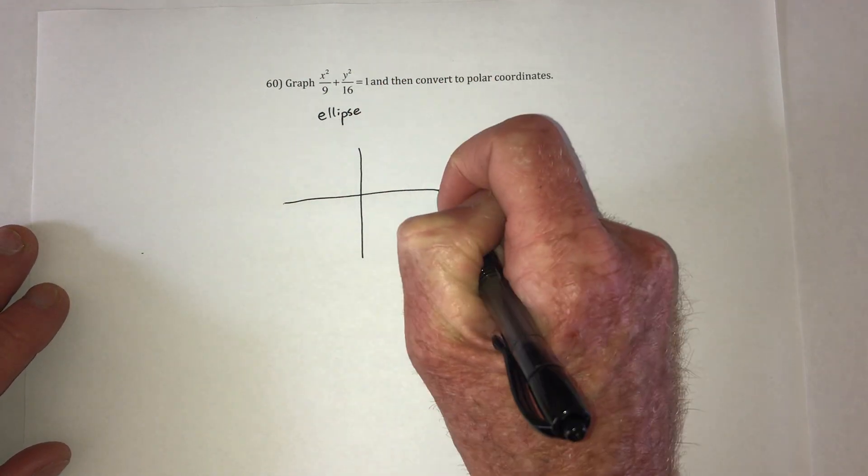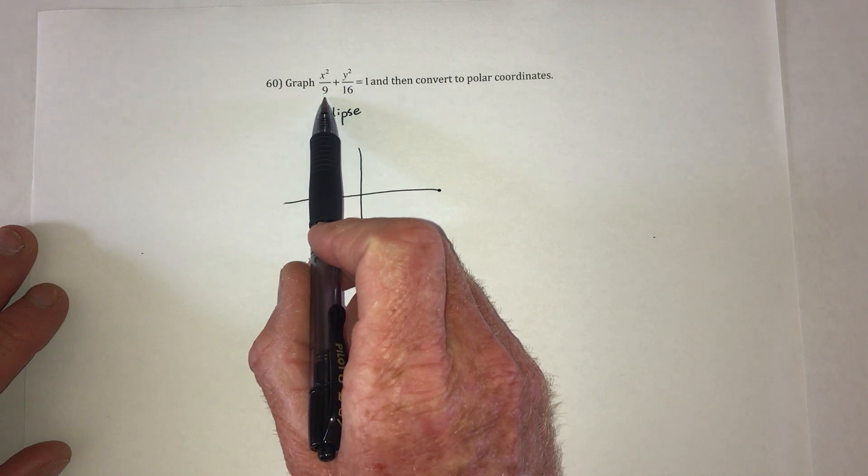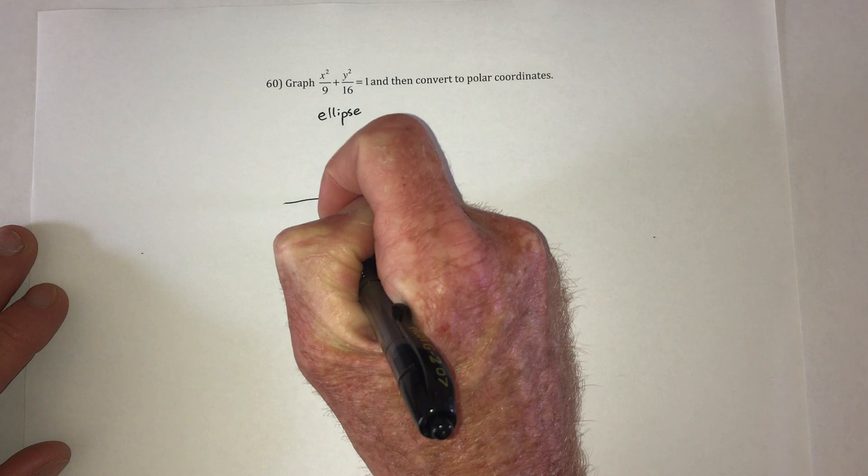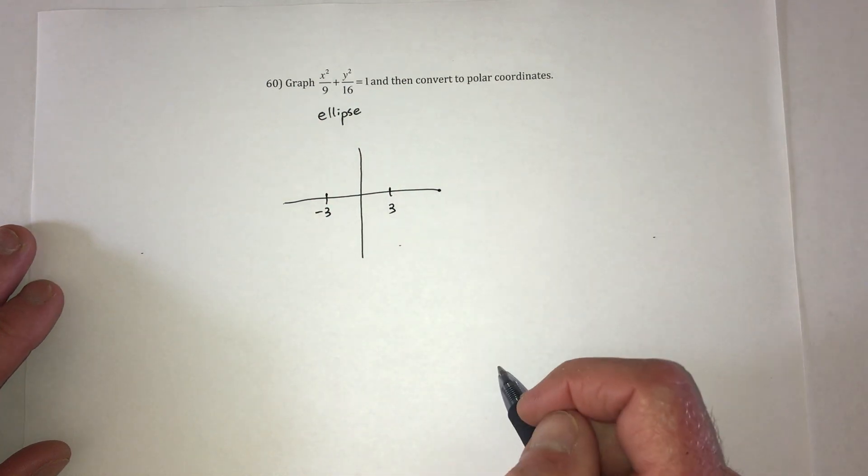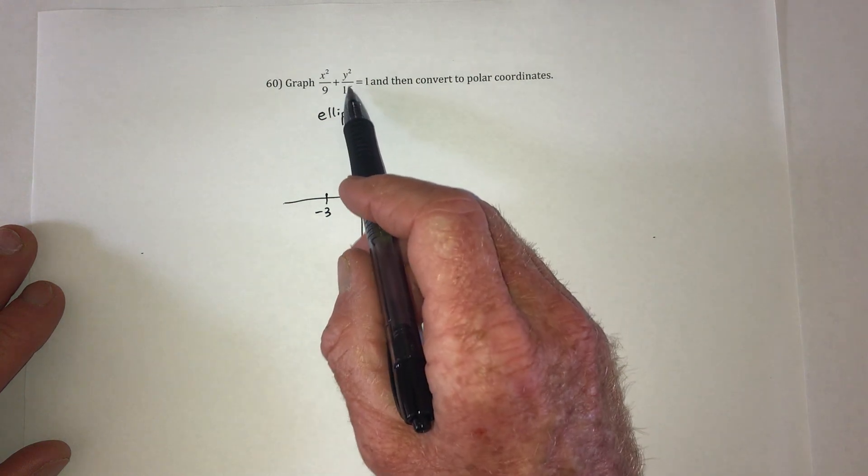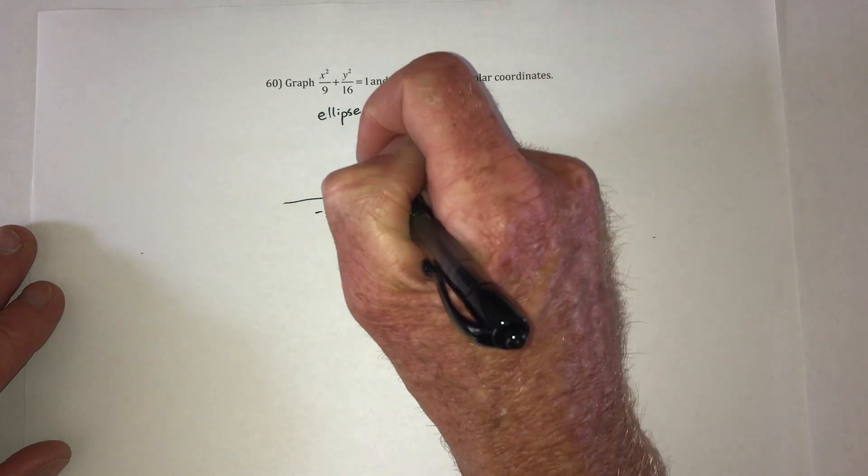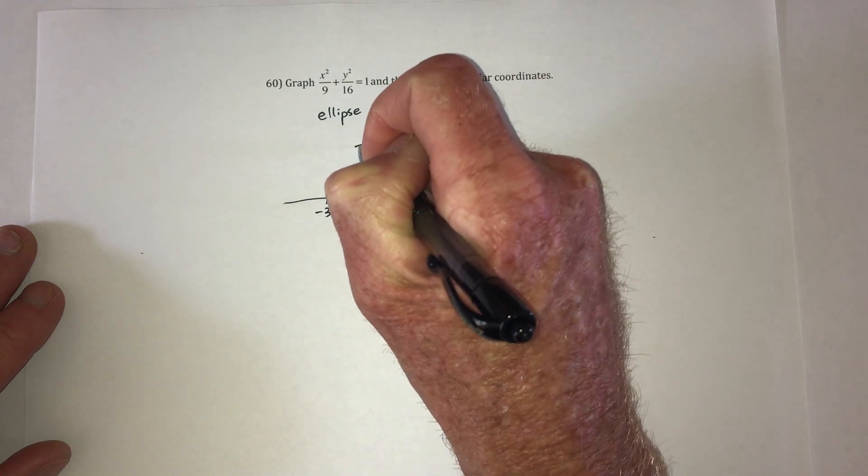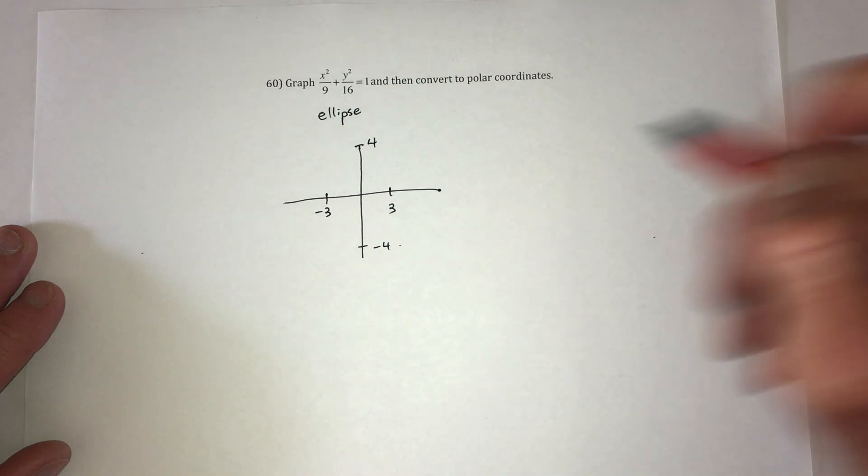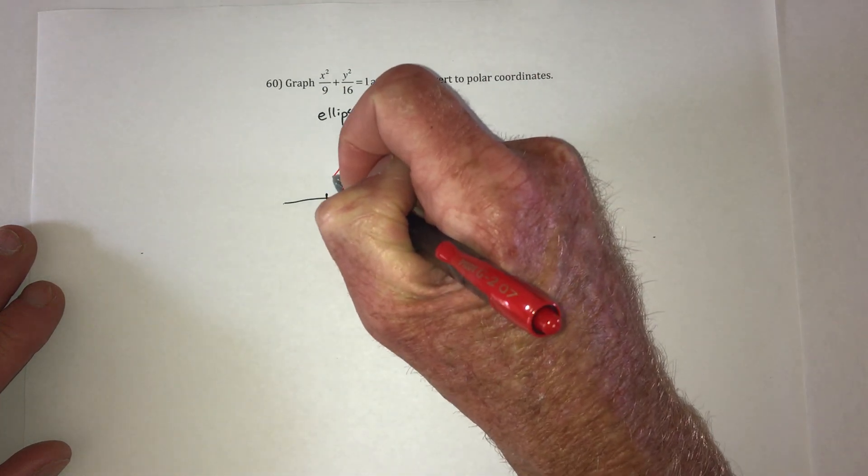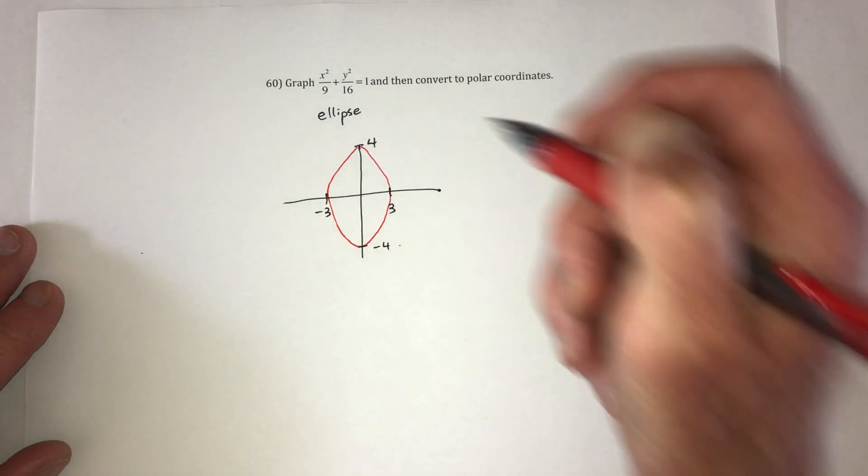And the way to graph it is you look at the x and then you take the square root of this number, which would be plus or minus 3. So on the x-axis you go over to plus and minus 3. Now look at the y part. For the number underneath, take the square root which will be plus or minus 4. So on the y-axis go to plus and minus 4. And then just draw you a pretty ellipse. There we go.